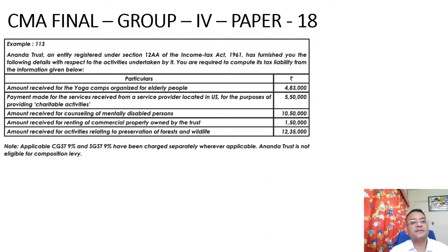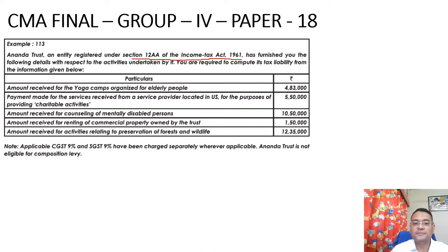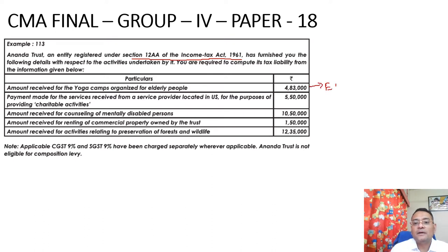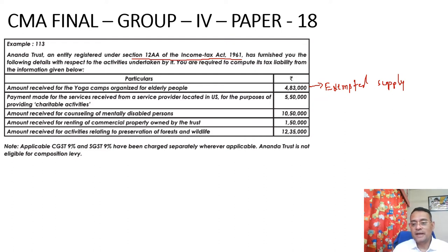Next is Ananda Trust, an entity registered under Section 12AA as a charitable trust under the Income Tax Act 1961. You are required to compute its tax liability. Amount received for yoga camps organized for elderly people is rupees 4,83,000. Please note that yoga camps are covered under exemption notification, so this is an exempted supply. The yoga camp activity is exempted under GST, so no GST will be levied on it.